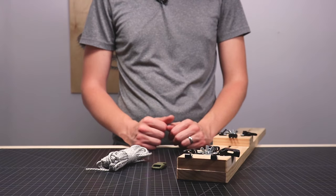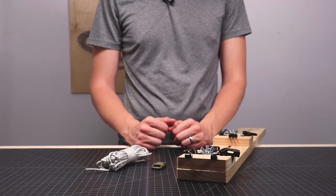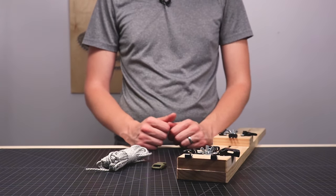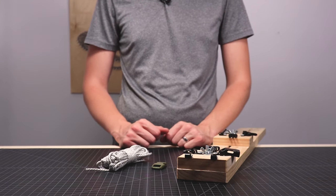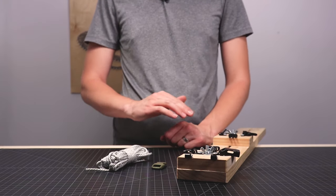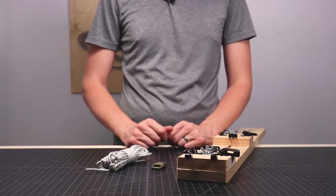Hey guys, welcome back to Paracord Planet. Today we're going to be making a trilobite bracelet. We've done varieties of this in the past, some fun themed ones. We'll put links to those in the description, but today we're just going to do the basic one. So if you've never made a trilobite bracelet before, this is the one to start on.